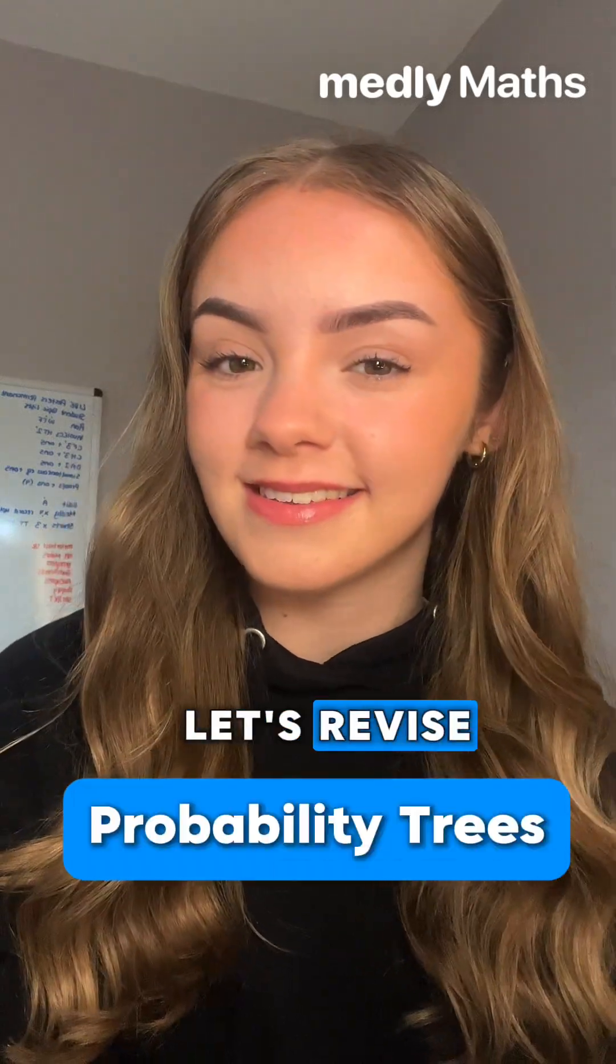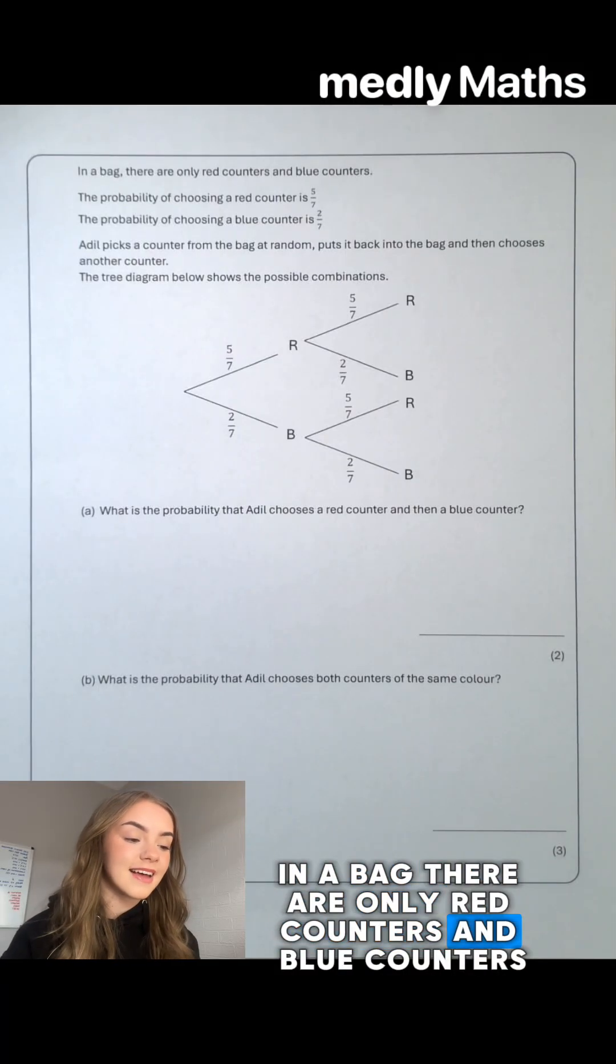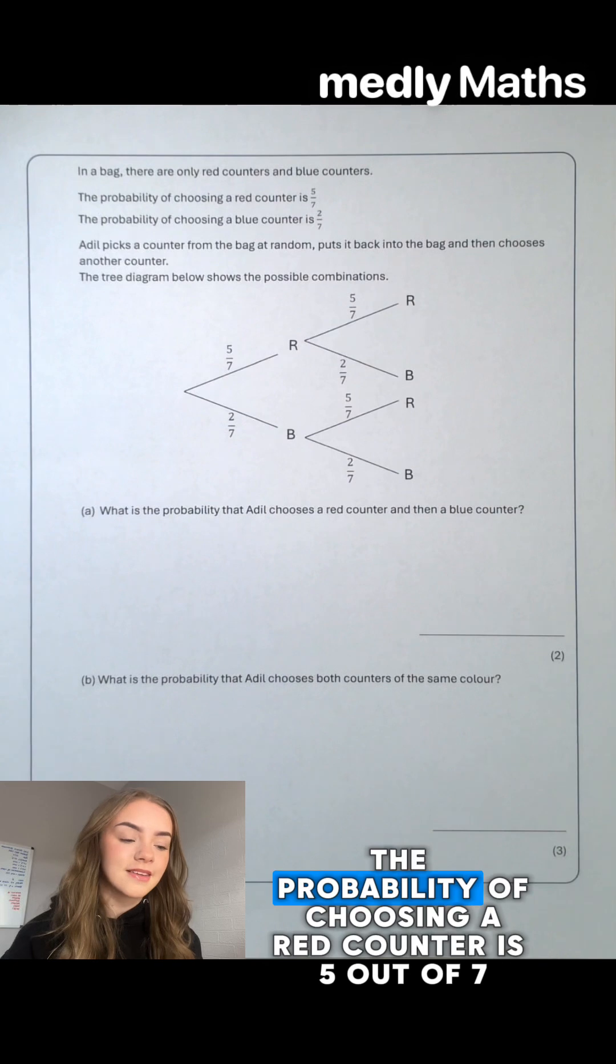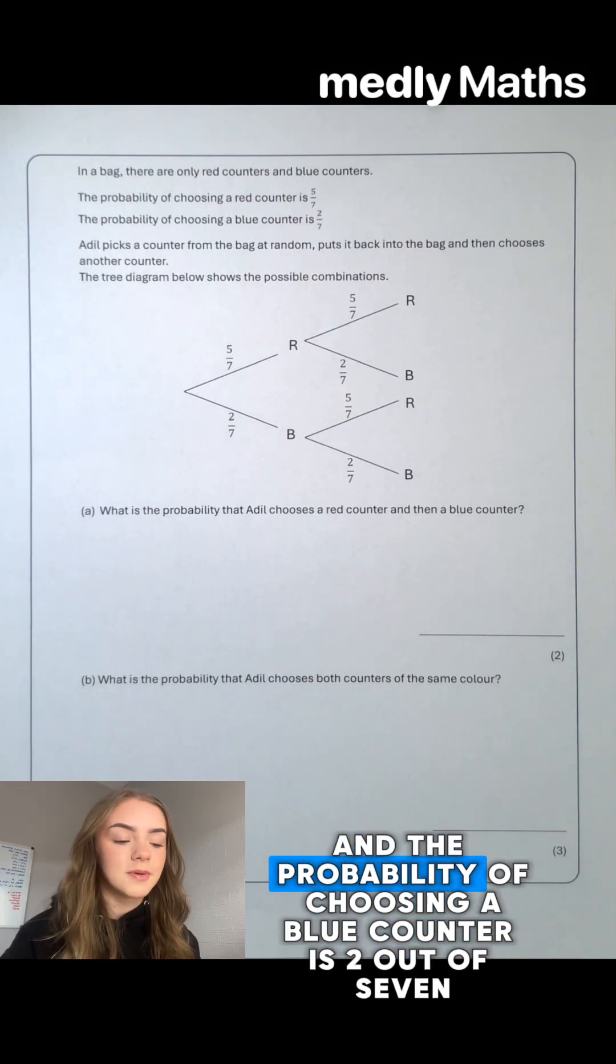Let's revise probability trees. In a bag there are only red counters and blue counters. The probability of choosing a red counter is 5 out of 7 and the probability of choosing a blue counter is 2 out of 7.